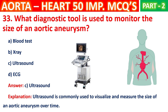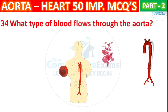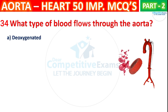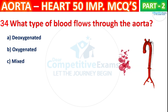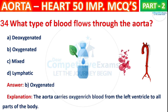Question No. 34. What type of blood flows through the aorta? The options are: Deoxygenated, Oxygenated, Mixed, or Lymphatic. The correct answer is B, that is oxygenated. The aorta carries oxygen-rich blood from the left ventricle to all parts of the body.